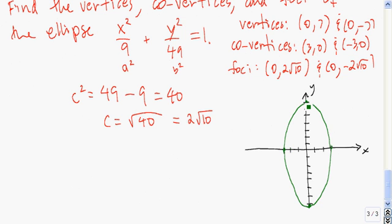Here we have the two vertices, the two co-vertices, and the two foci, which are right around here. So that's our ellipse.